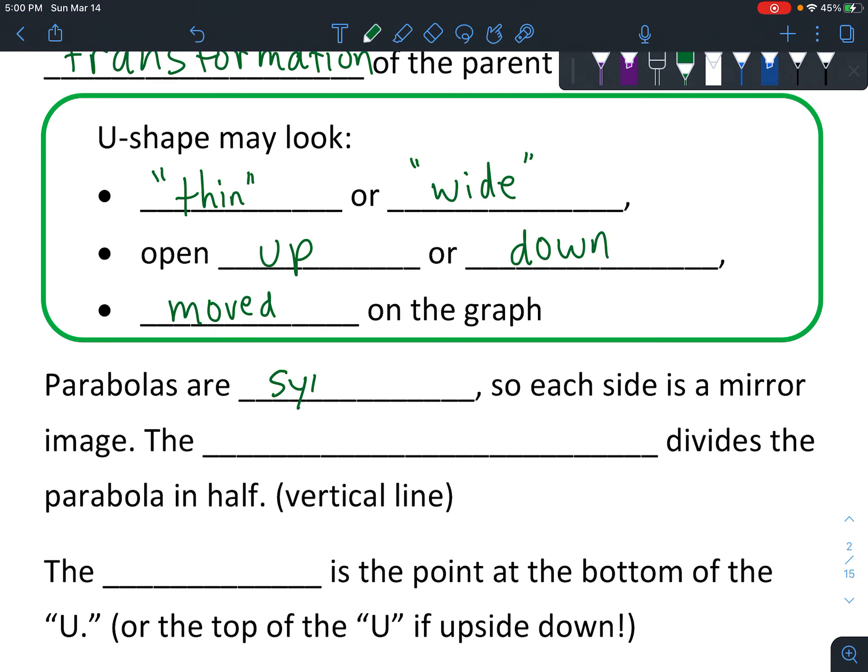Some general characteristics: parabolas are symmetrical, which means that there's basically a line that goes down the center, and each side of that line they look identical except they're opposite from each other. And that line is called the axis of symmetry.